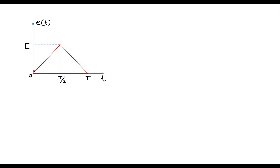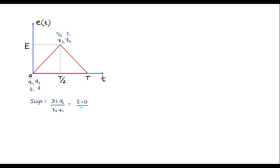We can observe that at t equal to 0, there exists one ramp signal. We are supposed to find the slope of this ramp signal. The coordinates are x1, y1 and x2, y2. Here x1 is 0, y1 is 0, x2 is T/2, and y2 is E. So the slope equals y2 minus y1 divided by x2 minus x1, that is E minus 0 divided by T/2 minus 0, which is nothing but 2E/T.